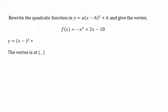In this problem, we're going to rewrite the quadratic function from general form, or f(x) = -x² + 2x - 10, to standard form, which is y = a(x - h)² + k.